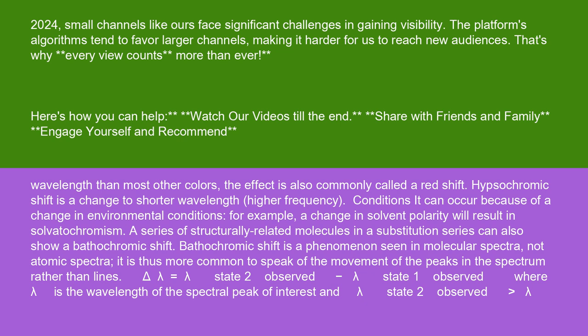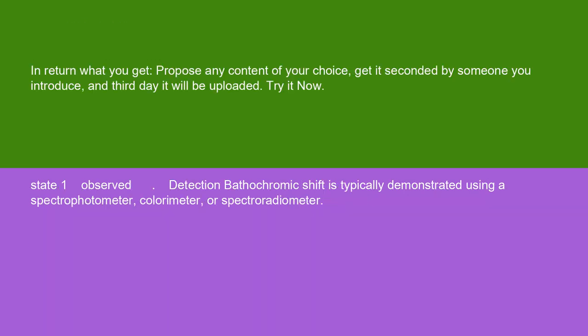Delta lambda equals lambda-state-2-observed minus lambda-state-1-observed, where lambda is the wavelength of the spectral peak of interest. Detection of bathochromic shift is typically demonstrated using a spectrophotometer, colorimeter, or spectroradiometer.